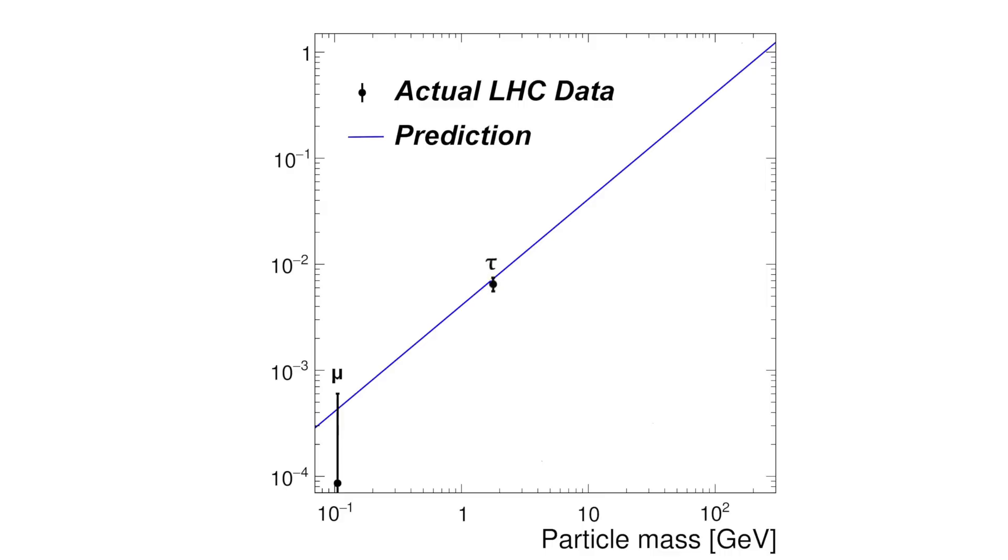What about the tau lepton, which has a mass of 1.8 billion electron volts? How do Higgs bosons decaying into tau leptons work? We see that the measurement agrees with the prediction pretty well. What about the bottom quark, with a mass of about 4.2 billion electron volts? We see pretty good agreement, although the error bar doesn't quite cross the prediction. But it's close and this is real data, so that's considered reasonable agreement.